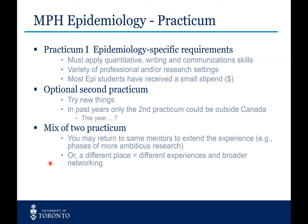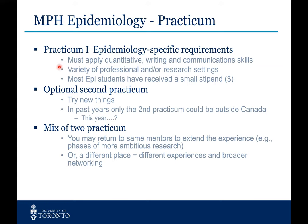That first required summer practicum needs to be a specific type — you need to be applying quantitative skills and writing up and communicating those results. These can happen in lots of different professional or research settings, and most epi students will receive a small stipend for that work. The optional second practicum is an opportunity to try something totally new — for example, if you were in a university research setting, you might use this one to go work at a public health agency to get a different type of experience. Or you can return to the same mentor for a more in-depth extended experience.